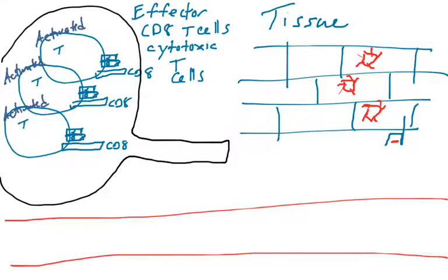So now we're going to cover the effector mechanism of CD8 positive T cells, also known as cytotoxic T cells. Right now we have T cells that have been activated and they're in the lymph node or other secondary lymphoid tissue. That's great,